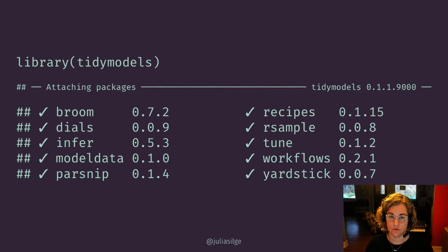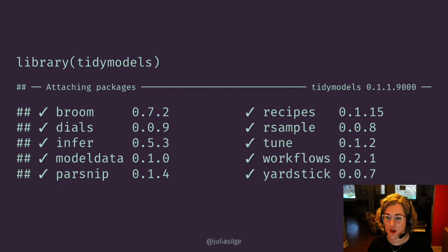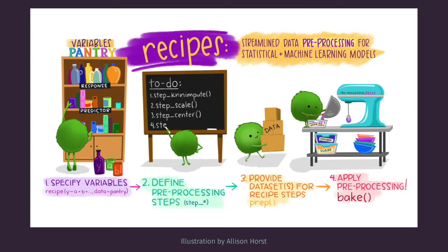For example, rsample has functions focused on resampling of data, and tune is a package focused on hyperparameter tuning. One of these packages is focused on feature engineering and data preprocessing, and it is called recipes. In tidy models, we capture data preprocessing and feature engineering concepts within this idea of a recipe: you choose what variables or ingredients you're going to use, you define the steps you're going to take with those ingredients, you prepare them using training data, and then you can apply that prepared recipe to any new dataset like testing data or new data.